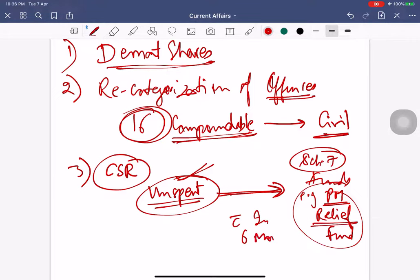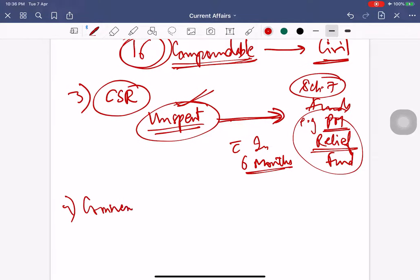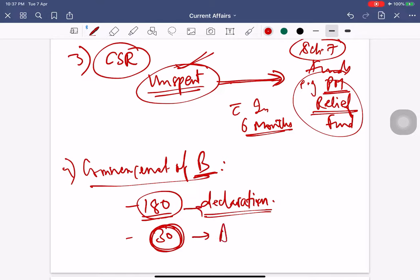Fourth is regarding the commencement of business. The bill states that a company may not start business unless it files a declaration within 180 days of incorporation confirming that every subscriber to the memorandum has paid for the shares agreed to be taken by him, and files a verification of the registered address with the registrar of companies within 30 days of incorporation.